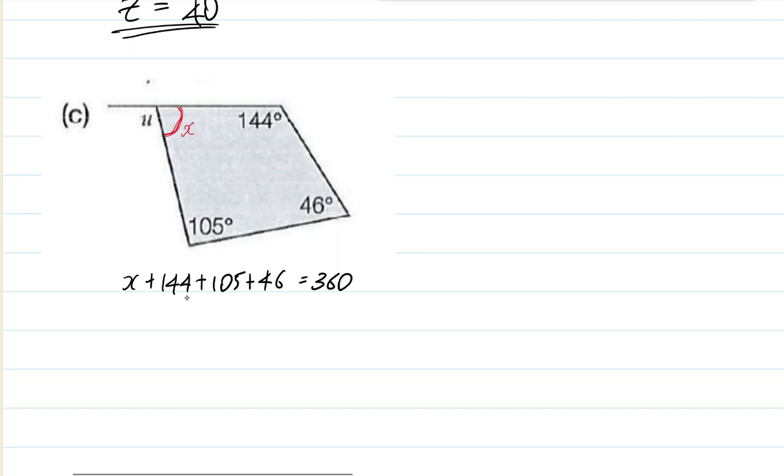Now, has somebody added these up? Can you give me the answer? 144 plus 105 plus 46? So X plus 295 should equal 360. I've got to subtract 295 on both sides. And so X equals, what's 360 minus 295, should be 65.